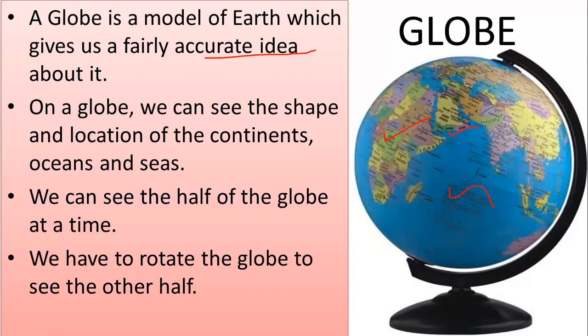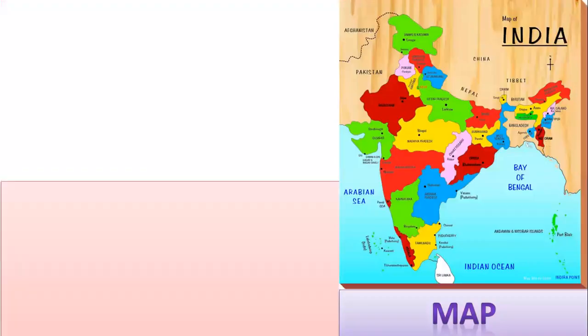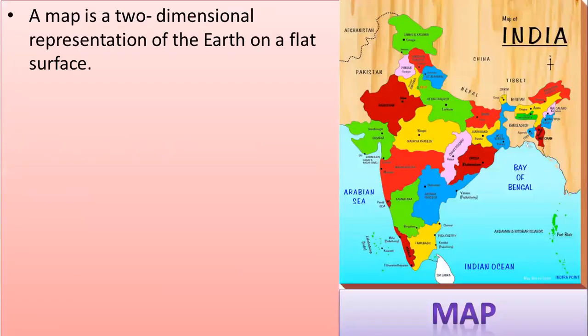If we want to see the other half we have to rotate it. There are some limitations of a globe: a globe does not give detailed information, a globe is difficult to carry because it occupies a lot of space and is heavy, and a specific area cannot be enlarged on a globe. For example, if I want to draw a map of a draft on the globe, that cannot be done.